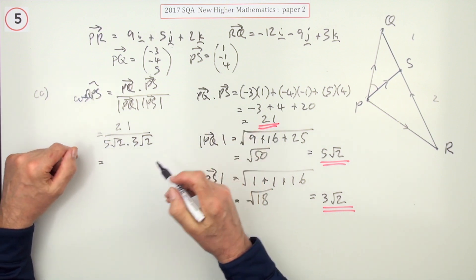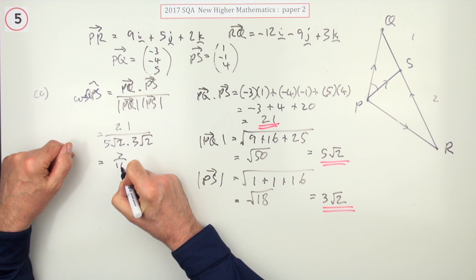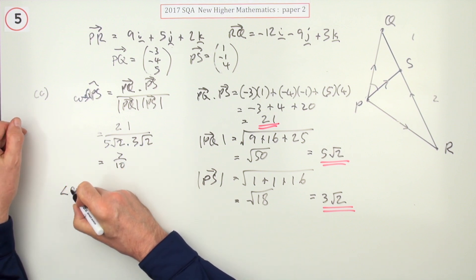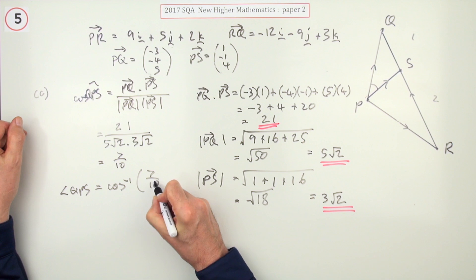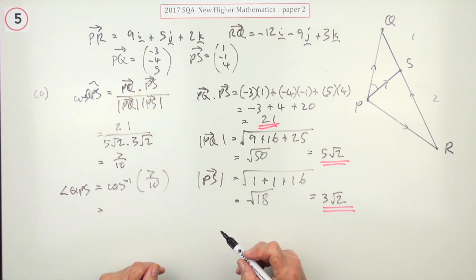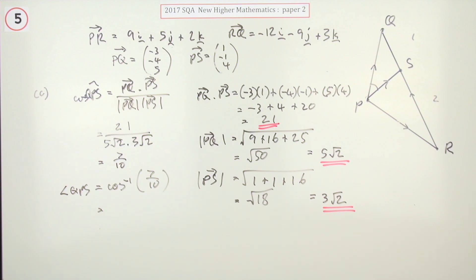Actually, I've got a calculator. You'd always press the buttons, wouldn't you? But 21 over 30 both divide by 3 to 7 and 10. So this angle, angle QPS, is going to be the inverse cos of 7 tenths. But you could just have done inverse cos of 21 over root 50 root 18 in all likelihood. And if you put that in, you get 45.572 and so on, so I reckon that would be 45.6 degrees.